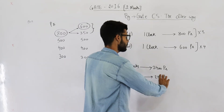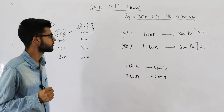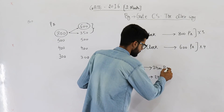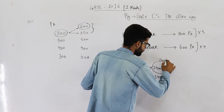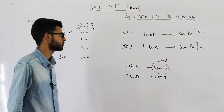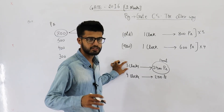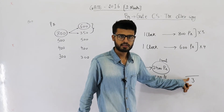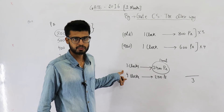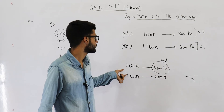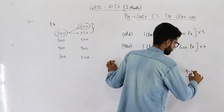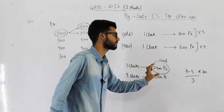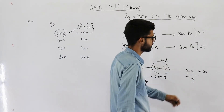In the same 2400 picoseconds, the old design processes only 3 instructions while the new design processes 4 instructions. To find percentage increase in throughput: the increase is 4 minus 3 equals 1 instruction. Percentage increase = (1/3) × 100 = 33.33 percent.